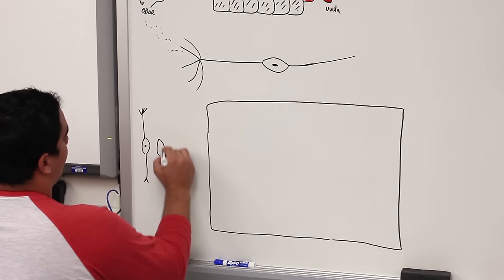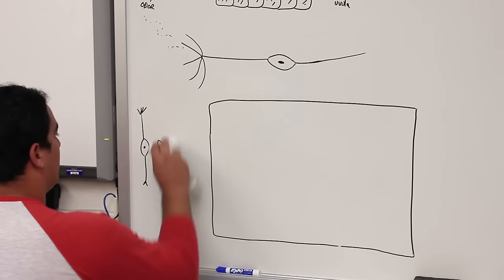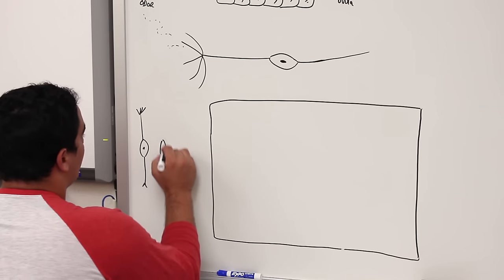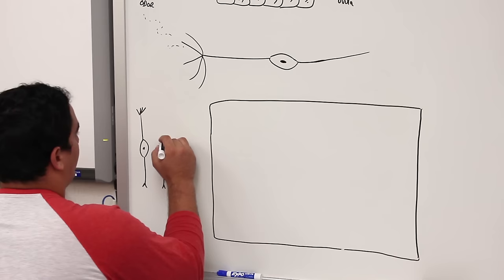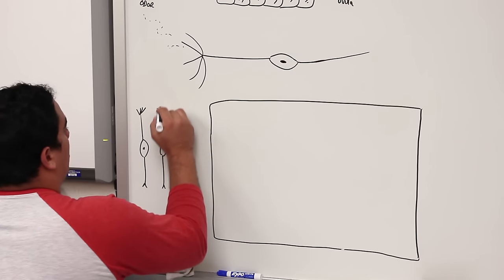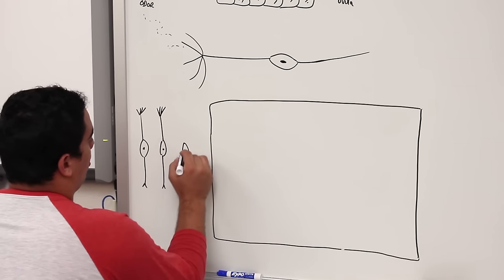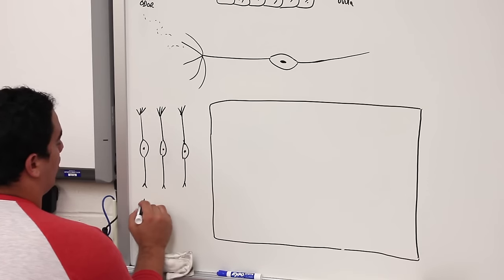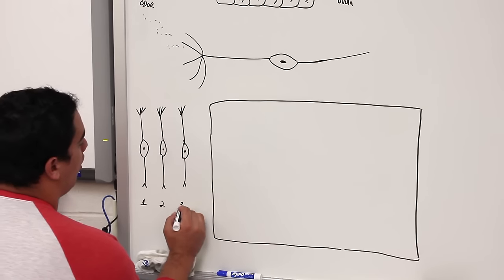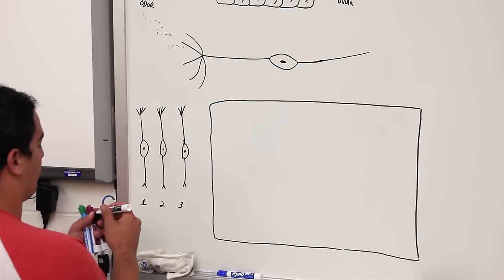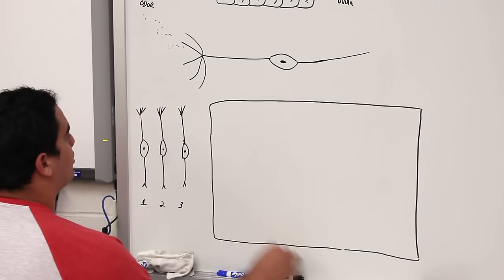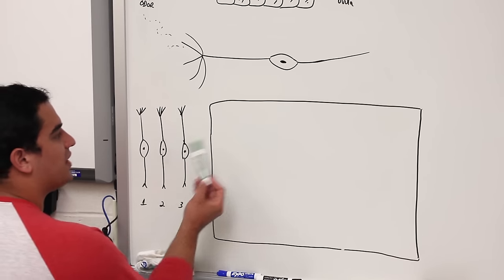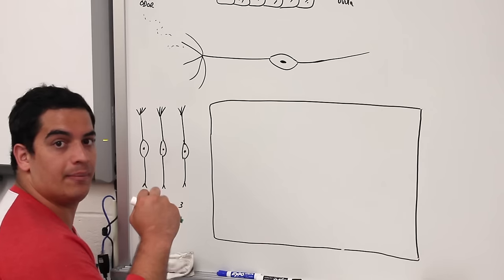Let me draw three olfactory neurons here — this is a really important concept. Let's call them olfactory neuron one, olfactory neuron two, and olfactory neuron three. On these ciliary extensions, each one expresses a specific type of receptor protein.